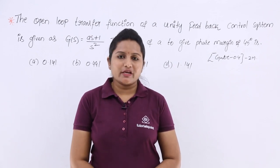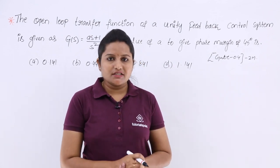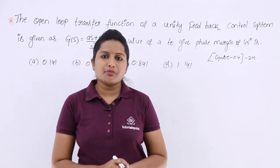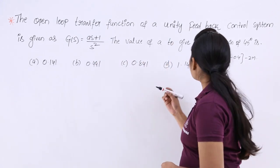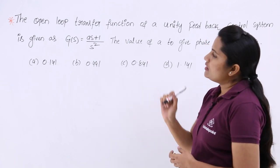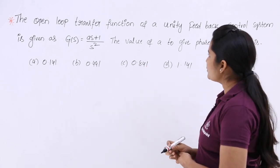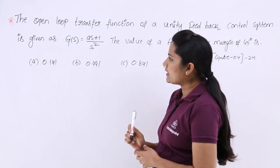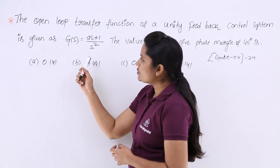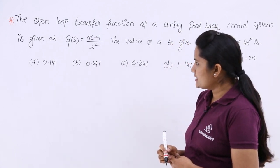In this video we are going to solve one more GATE problem related to frequency response analysis. This problem is given for 2 marks in GATE 2004. The open loop transfer function of a unity feedback control system is given as G(s) = (as + 1) / s².